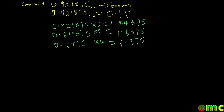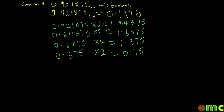You bring out your 1 and multiply the rest by 2. We have 0.375. We multiply 0.375 by 2 to get 0.75. In this case, 0 is our whole number part. We bring out the 0 and multiply the rest by 2 again.